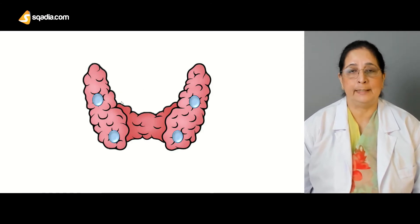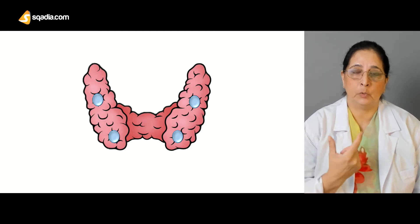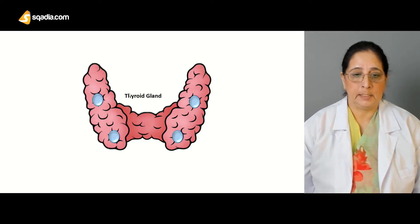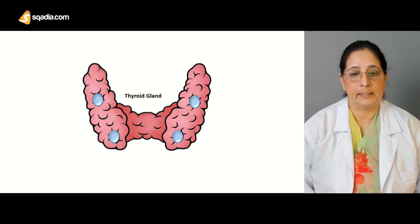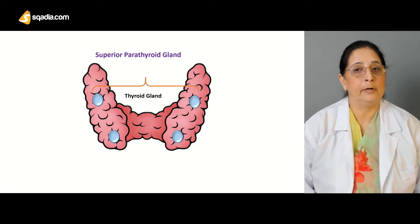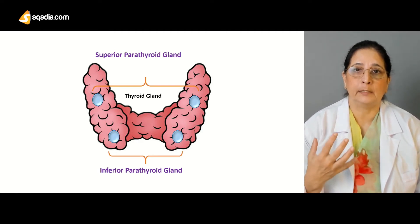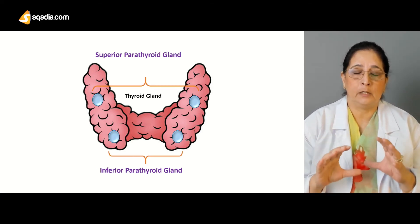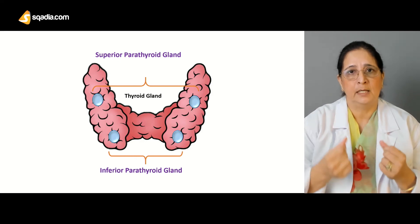The parathyroid glands are present around the thyroid gland — 'para' means around. There are four parathyroid glands: two superior parathyroid glands and two inferior parathyroid glands, located on the four sides of the thyroid gland. As you can see here, this is the thyroid gland and these are the parathyroid glands.